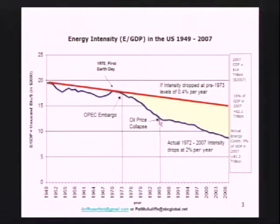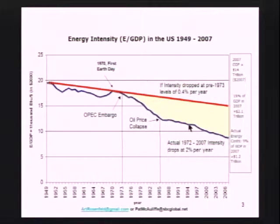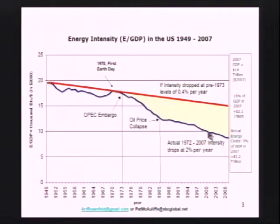Then OPEC collapsed, to a great extent because its market collapsed as the Western world went in for efficiency. This is what I call the Reagan-Thatcher years in which we said, 'Oh, we've solved that problem now, OPEC's collapsed.' And then this next region is pretty interesting. There's a paper by Joe Rome and me, and many others, who think that a lot of this is productivity increase brought on by the use of computers, personal computers, and better communications.